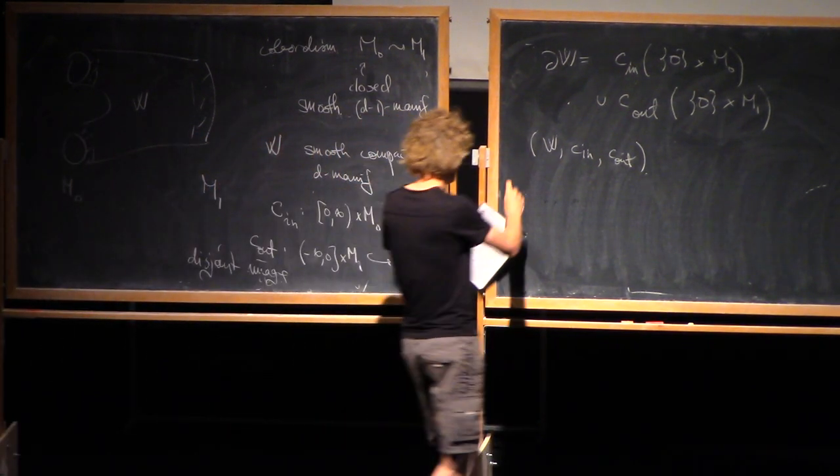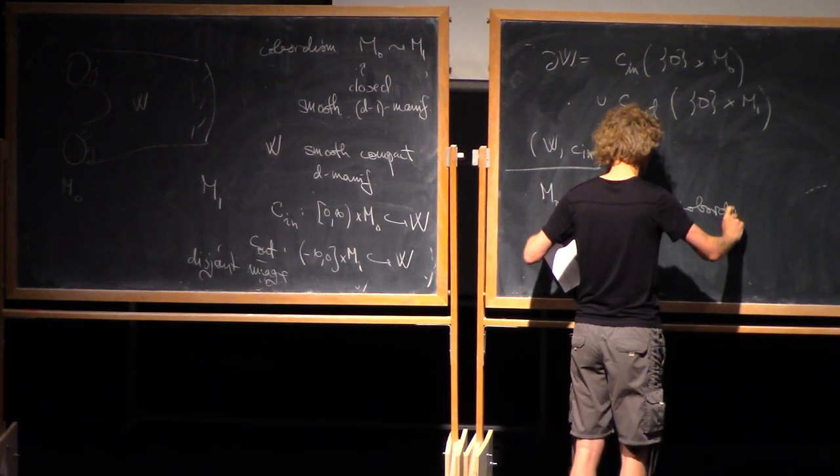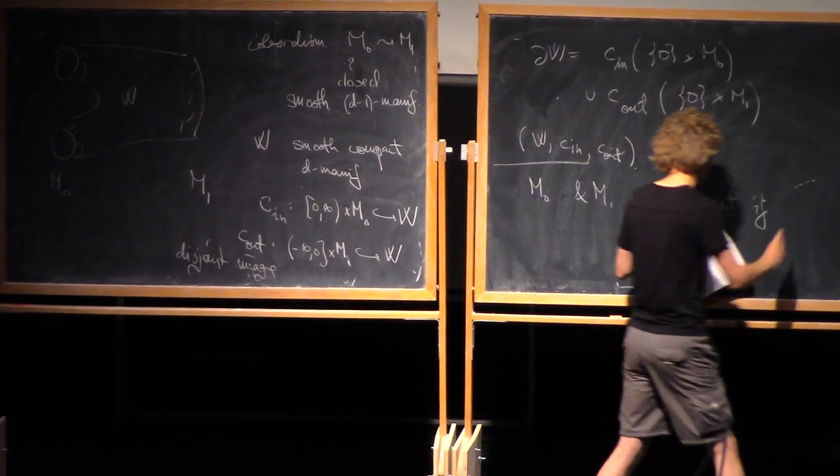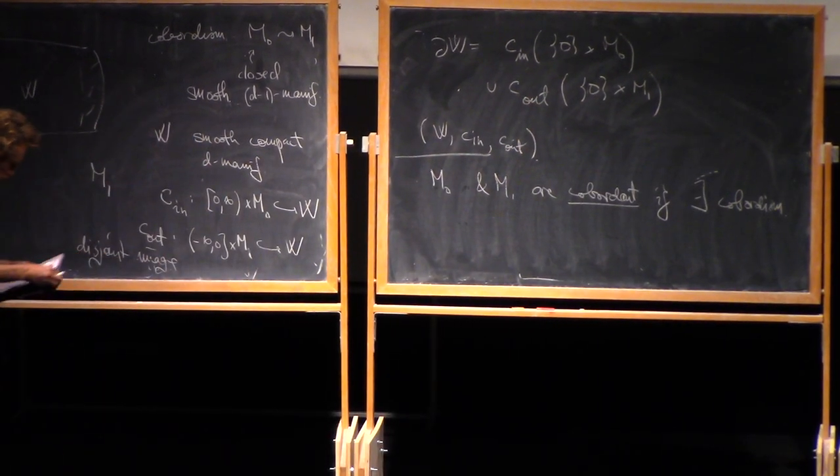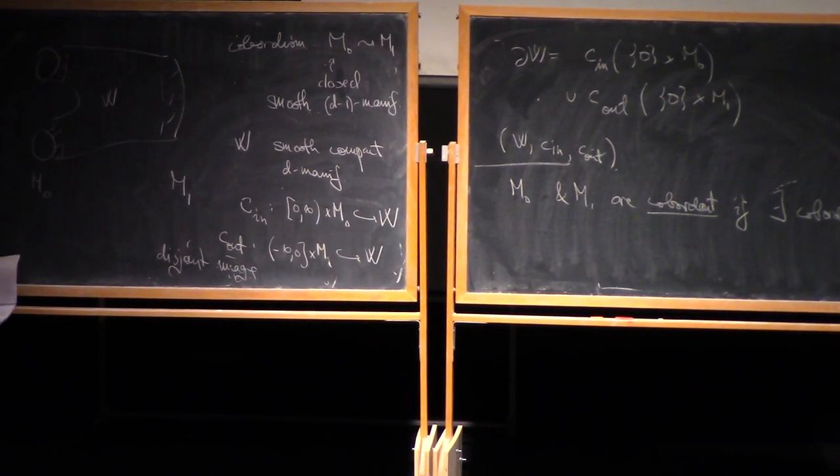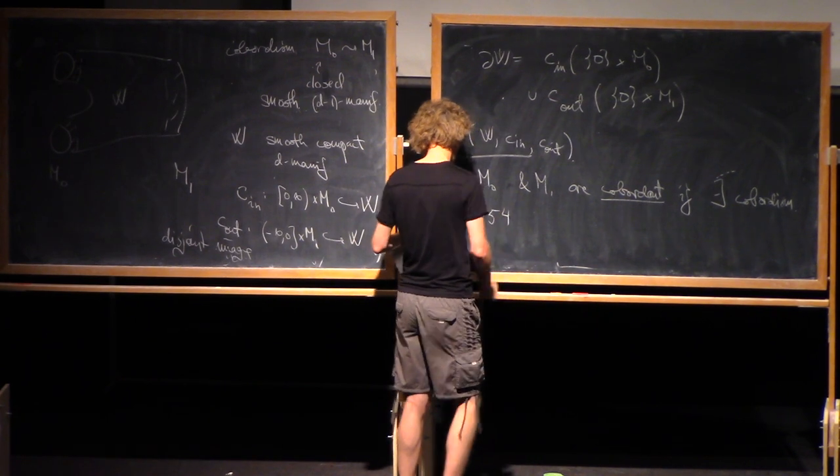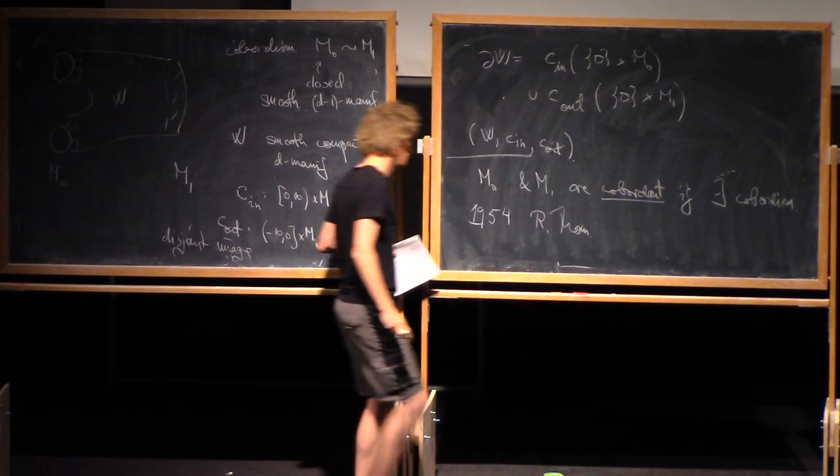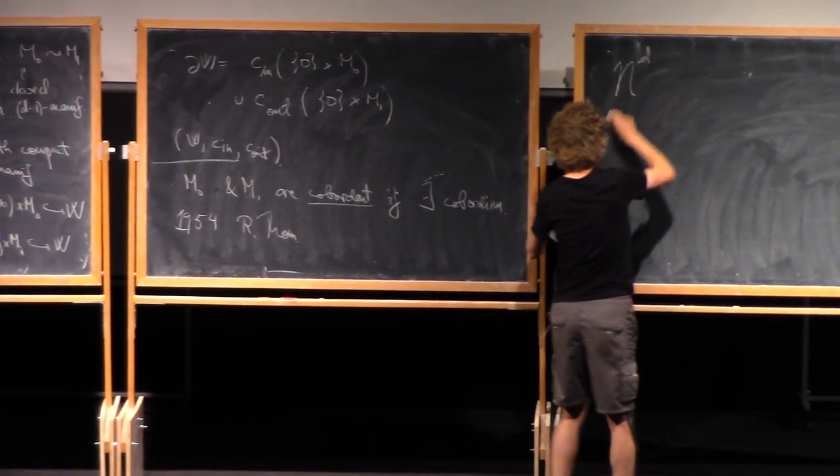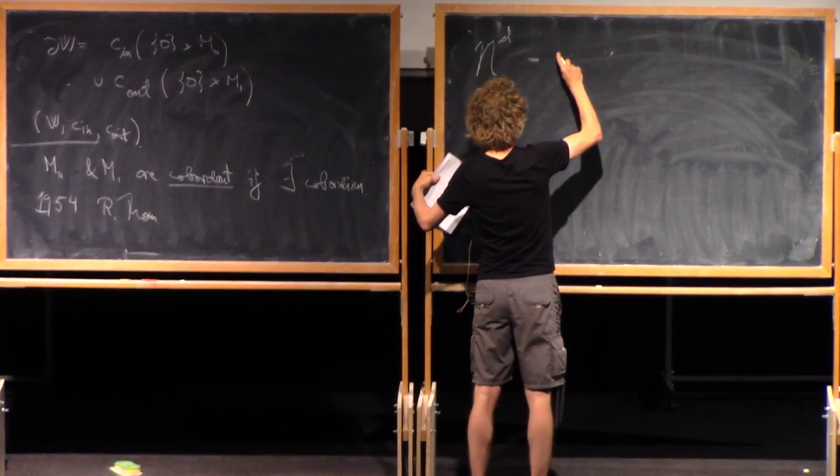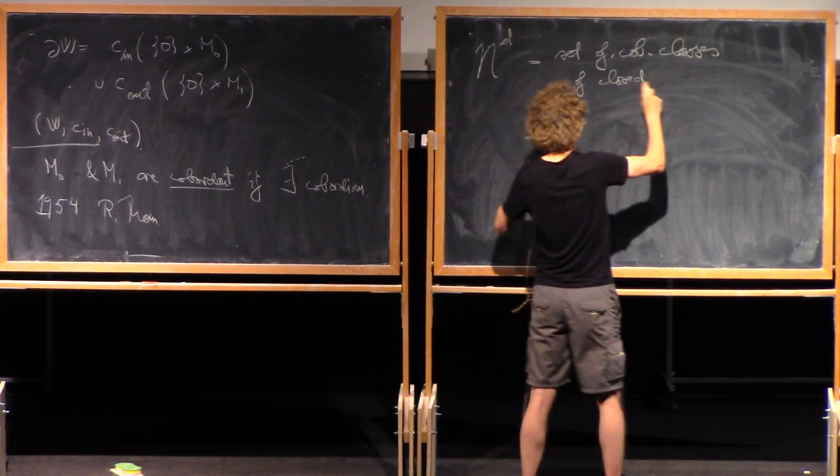A more classical notion is being cobordant. M0 and M1 are cobordant if there exists a cobordism. And just to say where this whole theory came from, in case you hadn't heard it, this is a famous paper of René Thom.